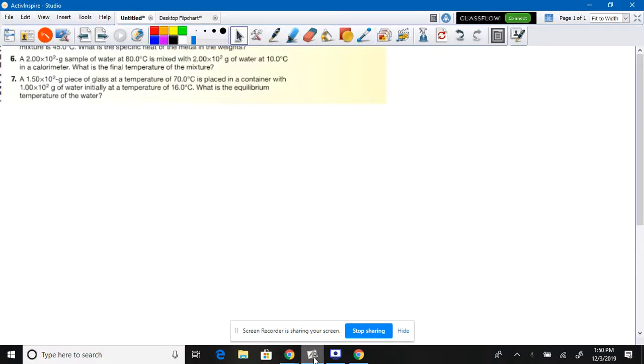In number six here, we have a 2.00 times 10 to the squared gram sample of water at 80 degrees Celsius mixed with 2 times 10 to the gram sample at 10 degrees Celsius in a calorimeter.